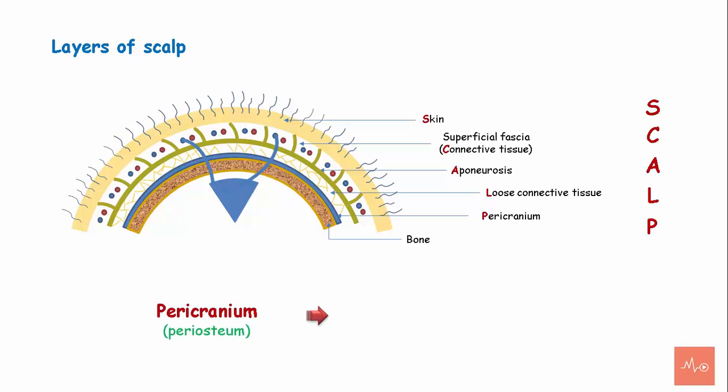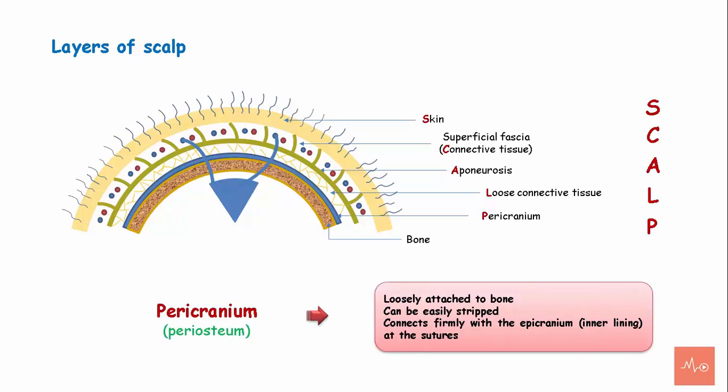Periosteum: this layer is loosely attached to the underlying bone and can be easily stripped off. However, it is firmly attached to the pericranium at the suture lining.